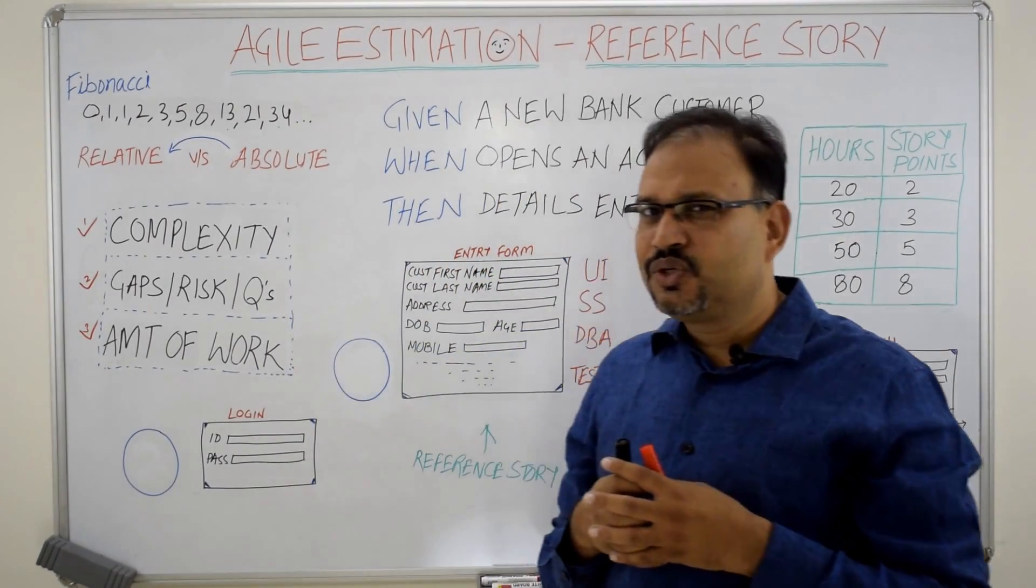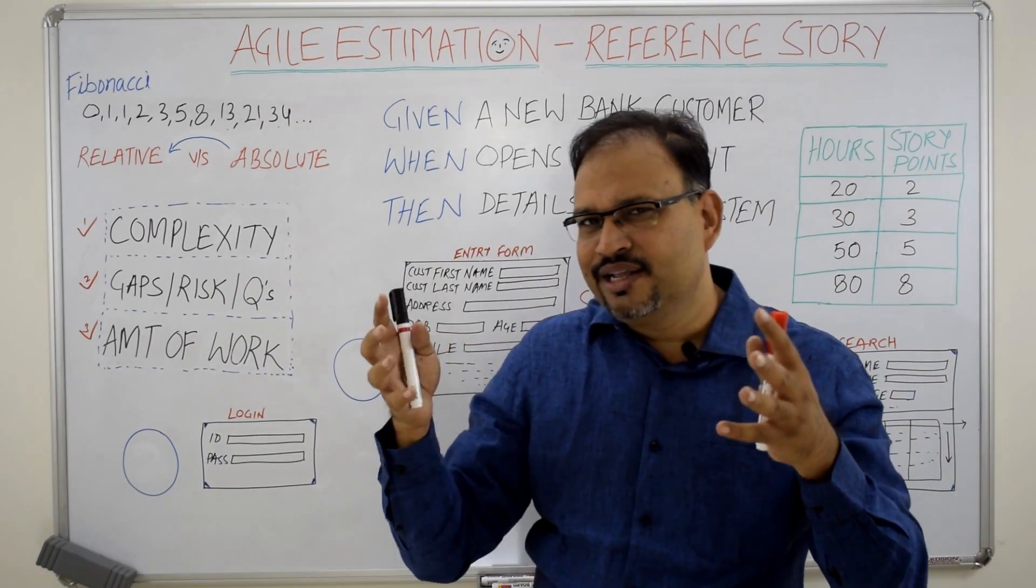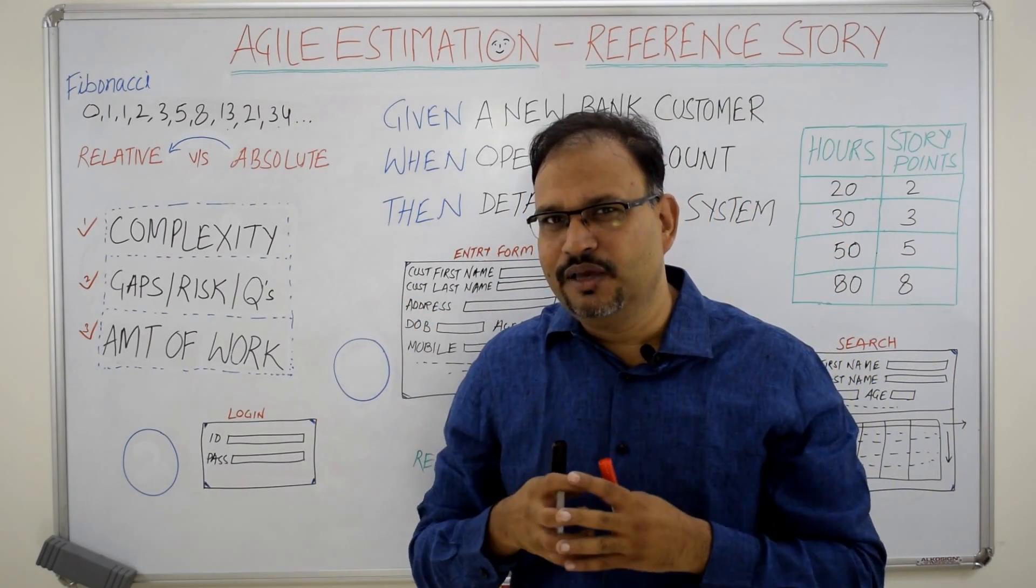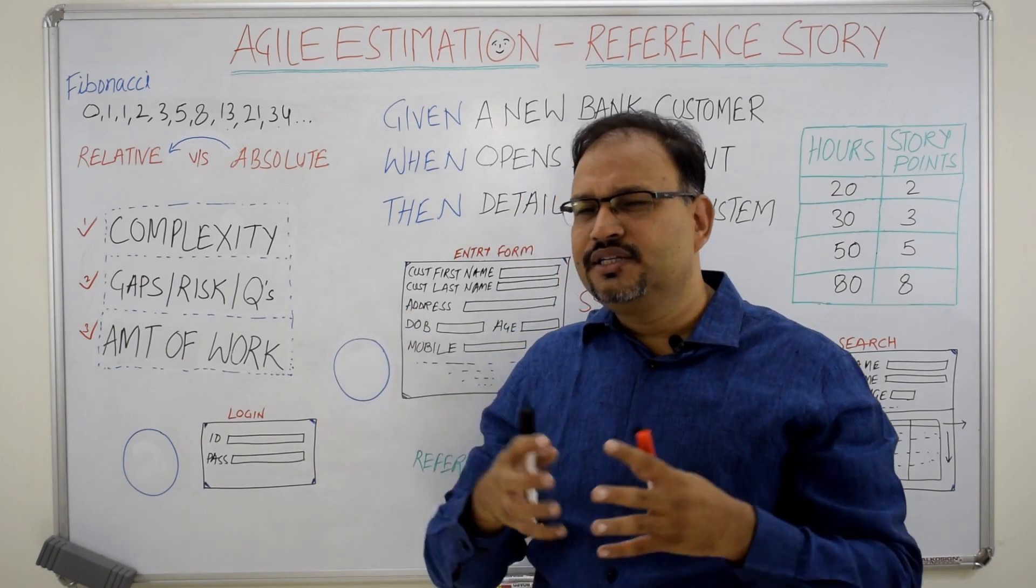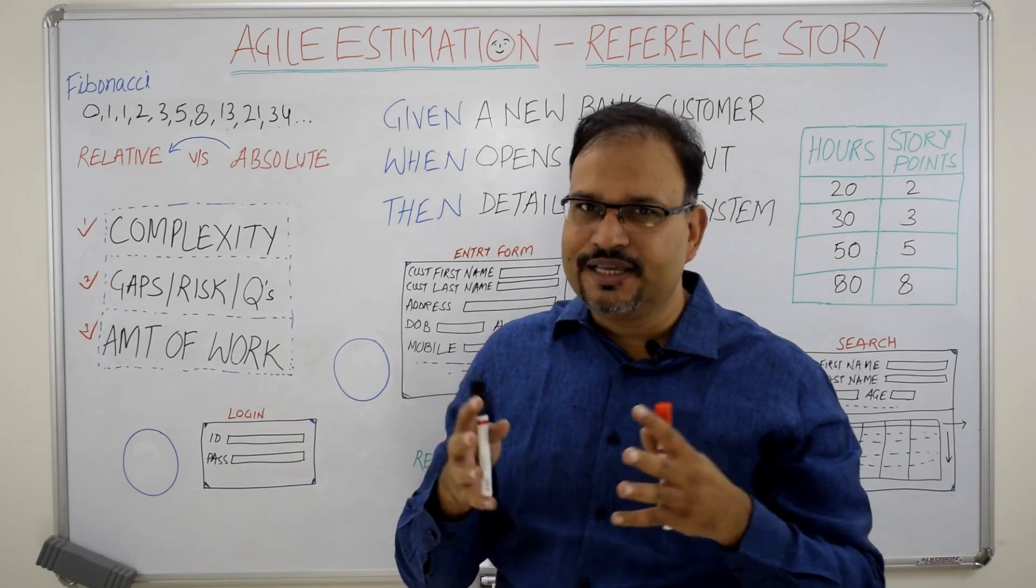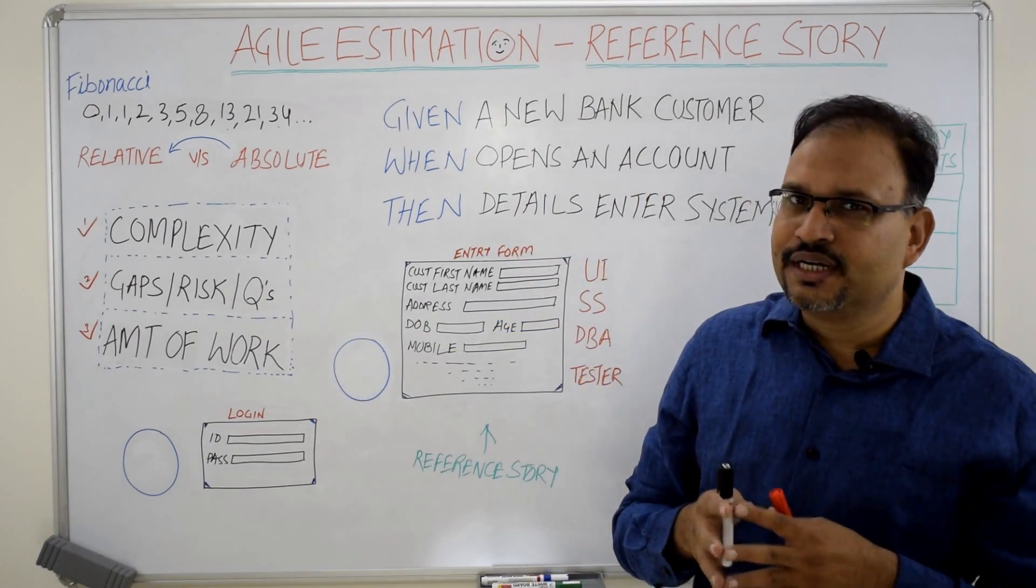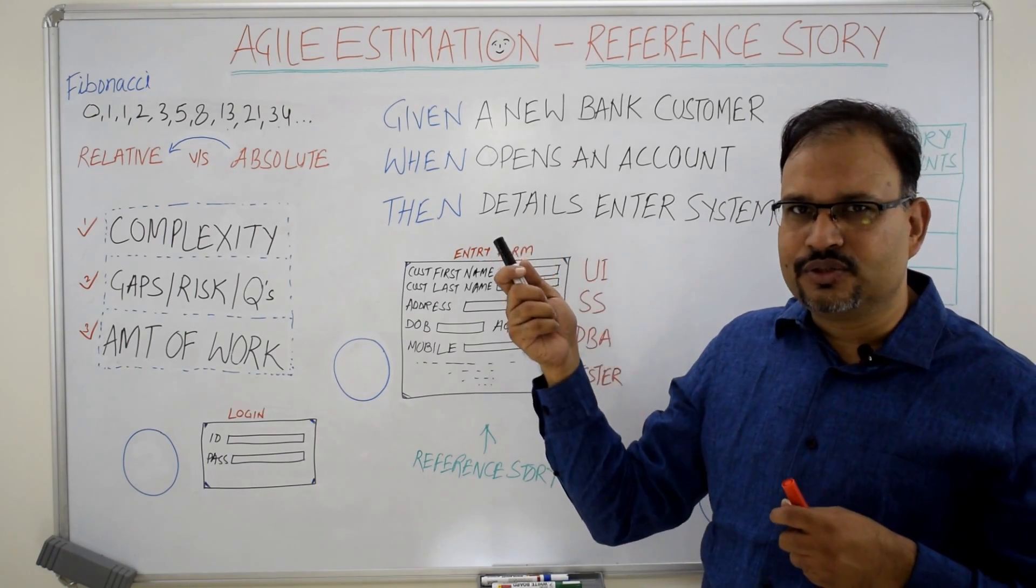Alternatively, there may be a story which is having say 10 text boxes, five dropdowns, couple of calls to the APIs, but then the logic it is using is very simple. In that case, this story is going to attract a lower story point comparing to that story.